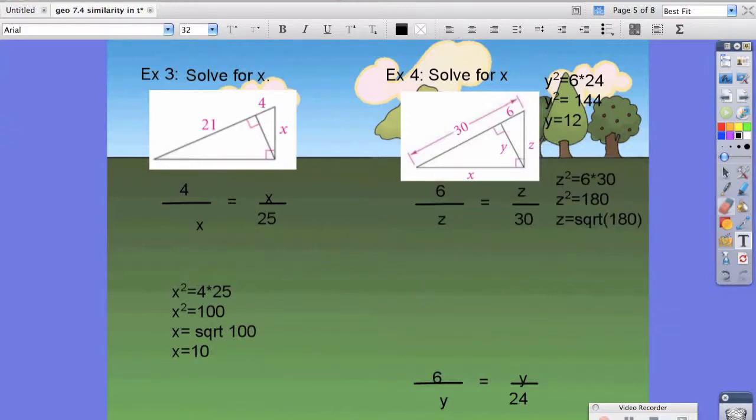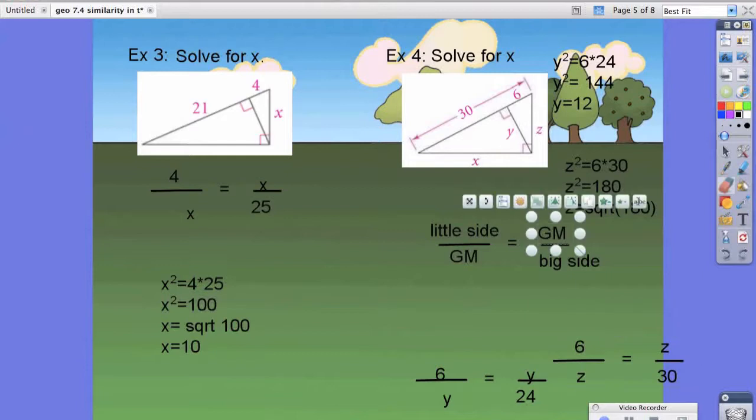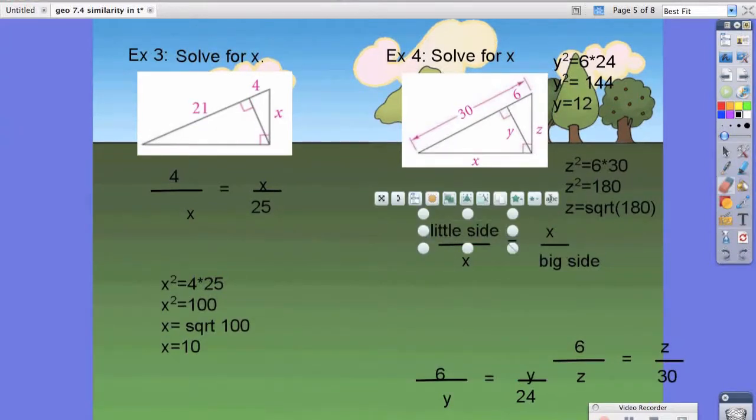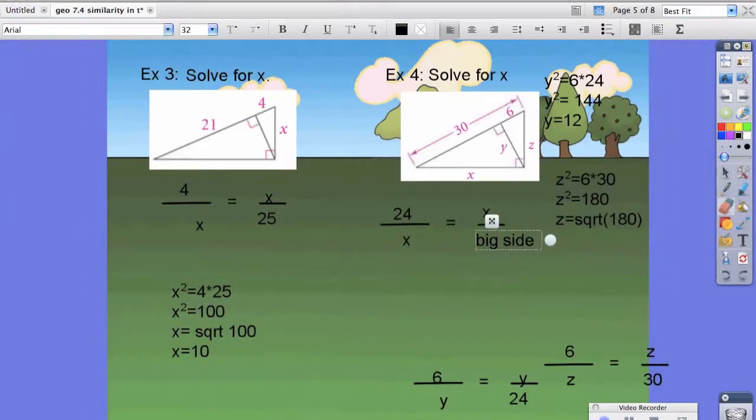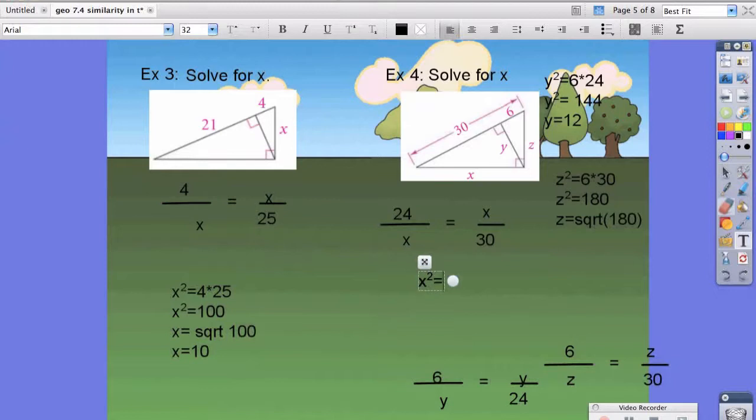Last but not least, we have to do the same exact thing for x. The geometric mean is x this time. The small side that's immediately touching the x is going to be 24, or 30 minus 6. The large side is going to be 30. Again, we take the cross product. X squared equals 24 times 30. X squared equals 720. X is equal to the square root of 720.